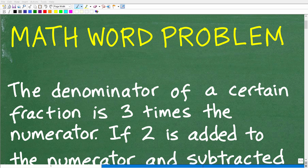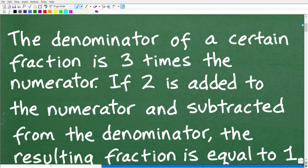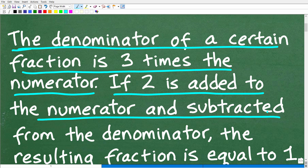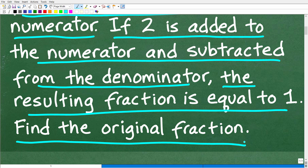Let's see if you have the math skills to solve this interesting little math word problem. Let me go ahead and read it. The denominator of a certain fraction is three times the numerator. If two is added to the numerator and subtracted from the denominator, the resulting fraction is equal to one. What we want to do here is find the original fraction.